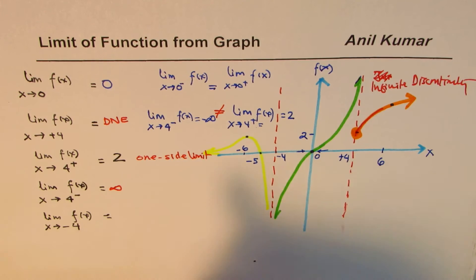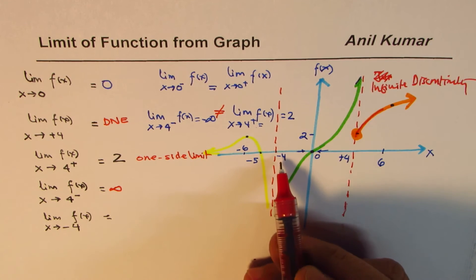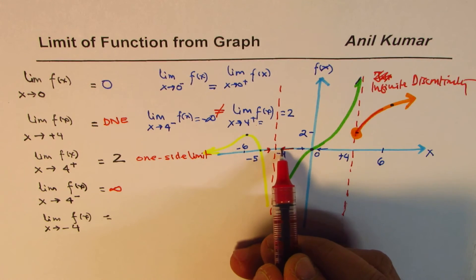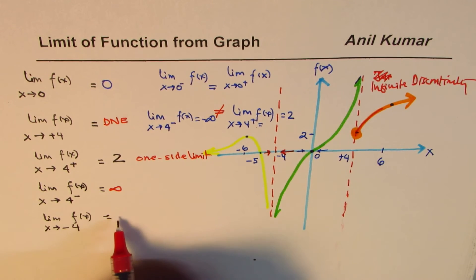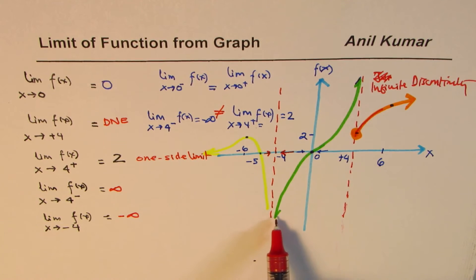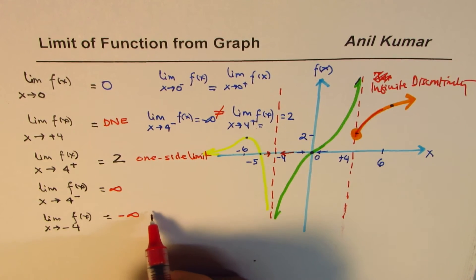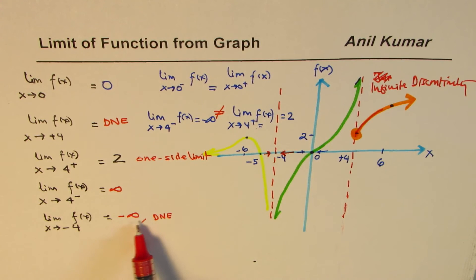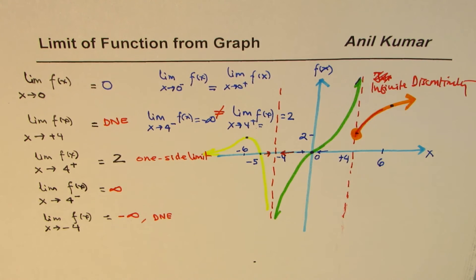The last question here is the limit of the function as x approaches minus 4. When you approach from the left side you approach negative infinity, and from the right side you also approach negative infinity. So from both sides you are approaching negative infinity, and the answer is negative infinity. At times since infinity is not a defined number we may also say it does not exist, but if negative infinity is a choice that is the preferred answer.